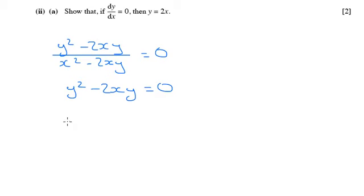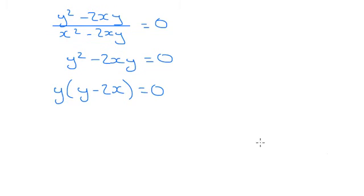And if I factorize the y out, we get y bracket y minus 2x equals 0. And therefore either y equals 0 or y equals 2x. And that's what they were looking for.